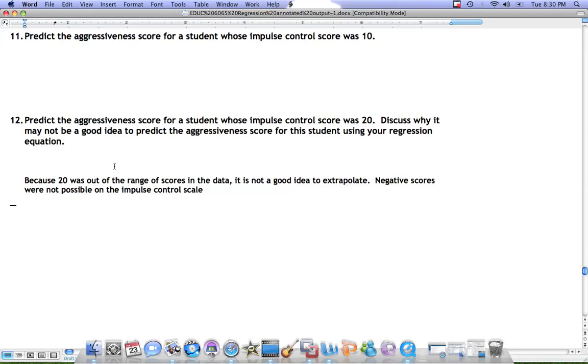If we want to predict the aggressiveness score for a boy whose impulse control score was 20, we would plug 20 into the equation.